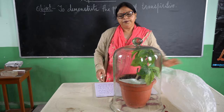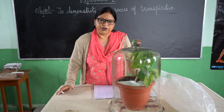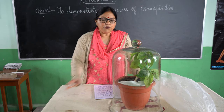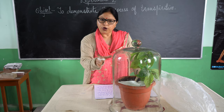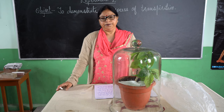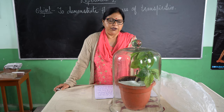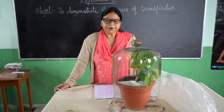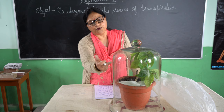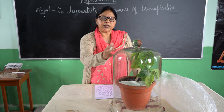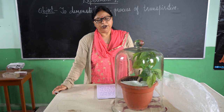In both ways, the process of transpiration will be demonstrated. When we keep this plant covered with a bell jar or polythene out in the sun, we have to wait for some time. After some time, we observe that there are droplets of water on the inner side of the bell jar or polythene.